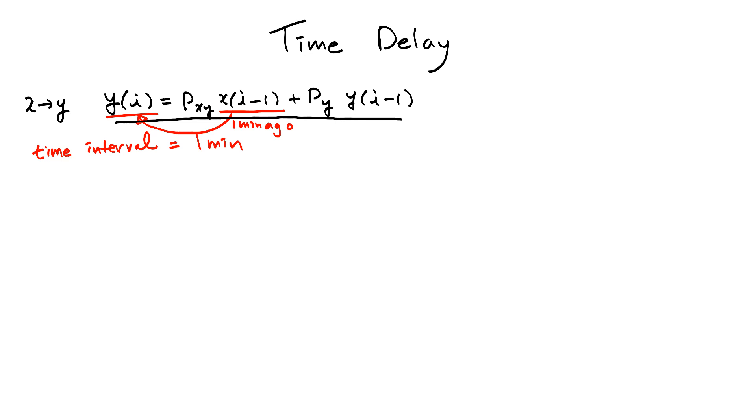But what if this protein activation process takes 20 minutes? So when X protein becomes available, Y protein will not become available after 1 minute, but after 20 minutes. Now this equation is saying that X protein concentration 20 minutes ago is affecting the current Y protein concentration.